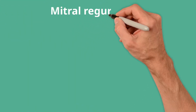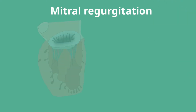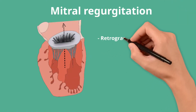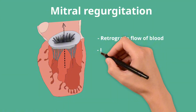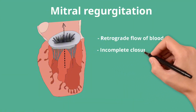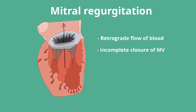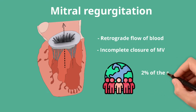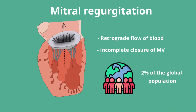Mitral regurgitation describes a retrograde flow of blood through the mitral valve in ventricular systole due to incomplete or failed closure of the mitral valve. Mitral regurgitation is one of the commonest valvular abnormalities, and is thought to have a global prevalence of around 2%, although it becomes more common as we age.